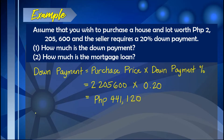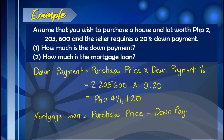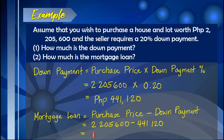To solve for the mortgage loan, we follow the formula: mortgage loan equals purchase price minus down payment. So we have $2,205,600 minus $441,120, giving us $1,764,480. This means the mortgage loan or balance left after deducting the down payment is $1,764,480. In our example, 20% of the house and lot is the down payment and 80% is under the mortgage loan.